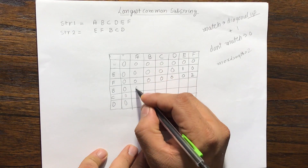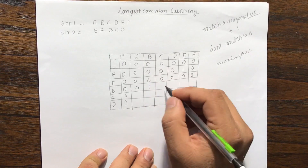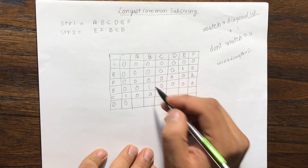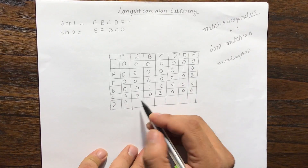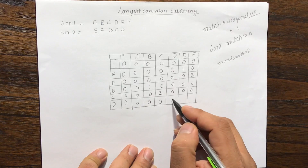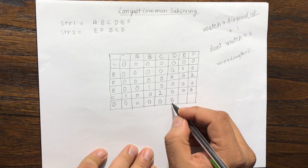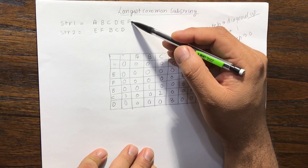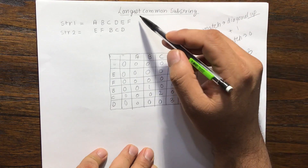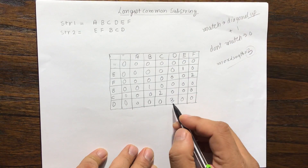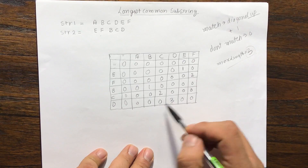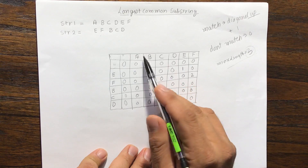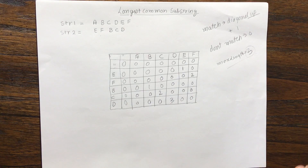Then we take b: b and a don't match; b and b match, so diagonal up plus 1 equals 1. Then 0, 0, 0, 0. With c: 0, 0; c and c match, so diagonal up (which is 1) plus 1 equals 2. Then 0, 0, 0. With d: they don't match, don't match, don't match; d and d match, so diagonal up (which is 2) plus 1 equals 3. So 3 is the biggest value. The longest maximum length becomes 3, meaning the longest common substring is b, c, d with length 3. To retrieve the actual substring, we go back 3 steps: b, c, d.